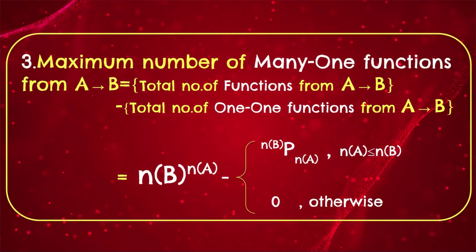What is the maximum number of many-one (non-one-one) functions from A to B? A function that is not one-one is many-one. The total number of many-one functions equals the total number of functions from A to B minus the total number of one-one functions from A to B, which is N(B)^N(A) minus N(B) P N(A), only when N(A) ≤ N(B). If N(A) > N(B), it is the total number of functions itself.